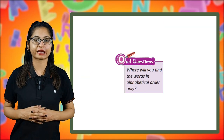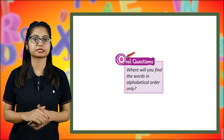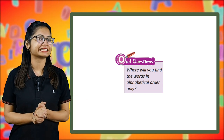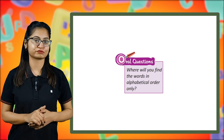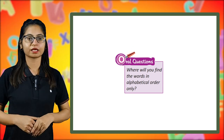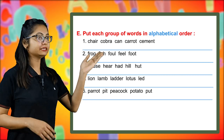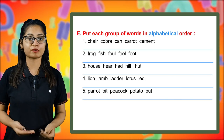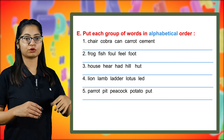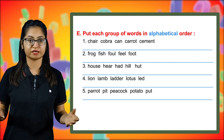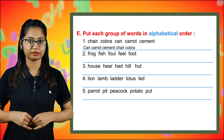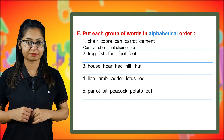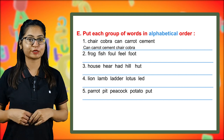Let me ask you an oral question: where will you find words arranged in alphabetical order? Write out the answers in your copy — I'll check later after the lesson. Now let's move to Part E: put each group of words in alphabetical order. The first group is chair, cobra, can, carrot, cement. The answer is: can, carrot, cement, chair, cobra.